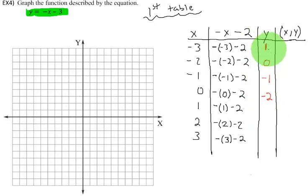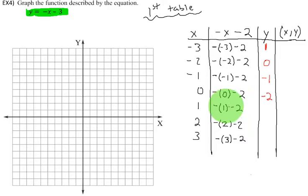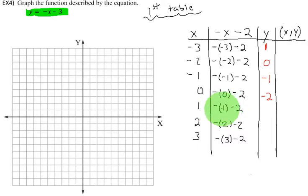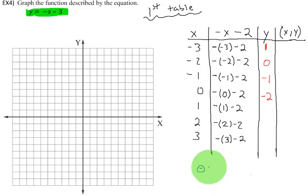Now I have 0 in the parentheses — it's neutral, neither negative nor positive. Regardless of the negative sign outside, negative 1 times 0 would still be 0. So I have 0 take away 2, which gives me negative 2. Are you starting to see a pattern? It looks like my y value is decreasing by 1 unit each time.